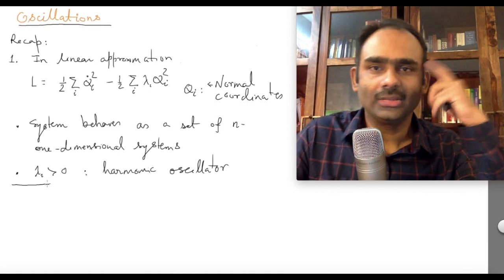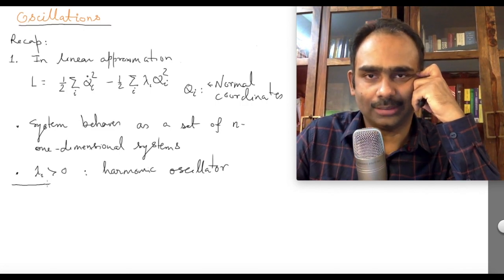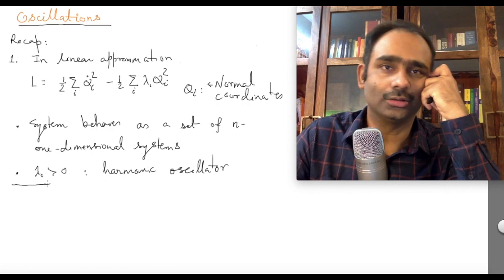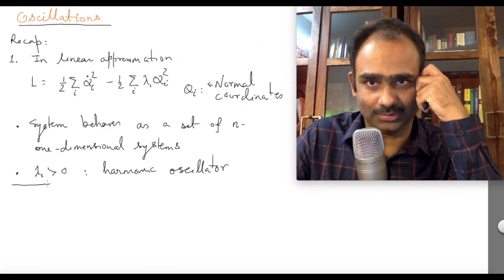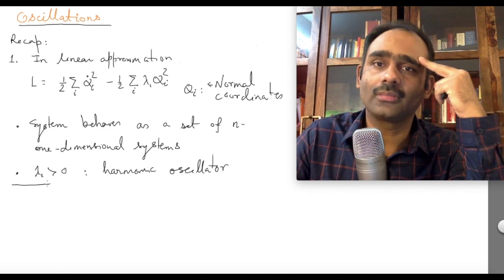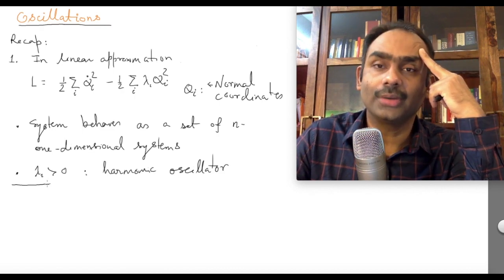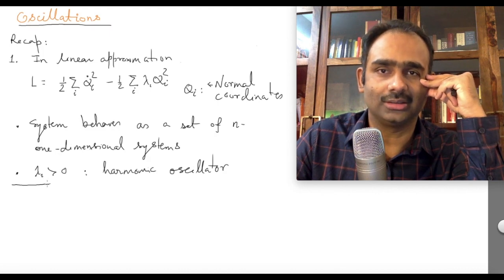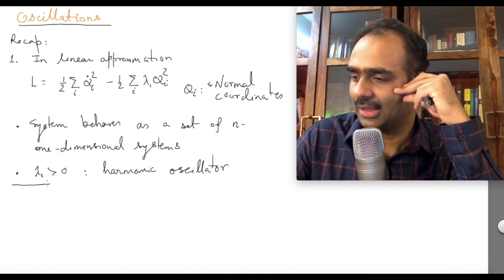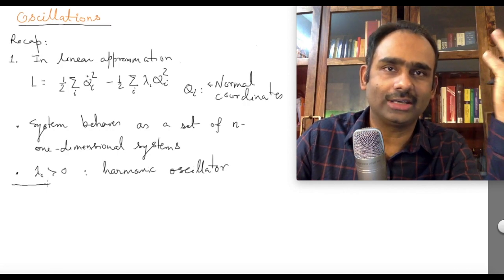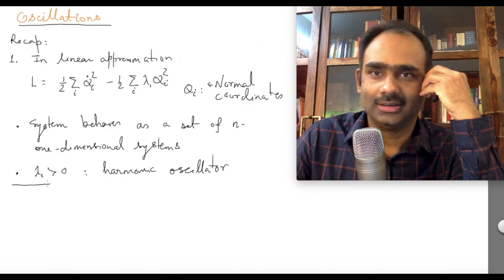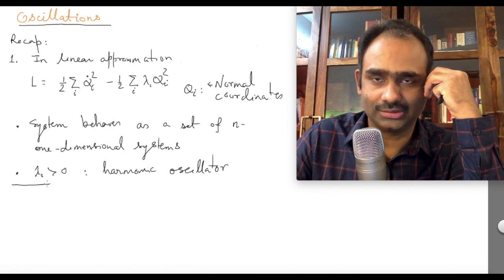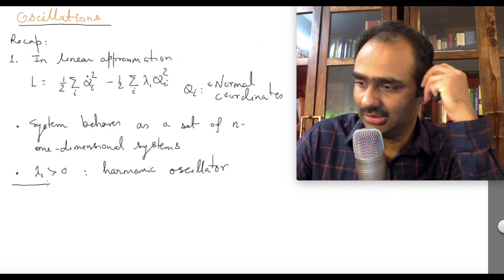If our lambda_i are greater than 0, look at a particular generalized coordinate q_i — if for that particular coordinate lambda is greater than 0, then the contribution to the Lagrangian from that generalized coordinate is that of a harmonic oscillator. There are several things that can happen to lambdas: they could be positive, they could be negative, or they could vanish. Because these correspond to real symmetric matrices, these lambda_i eigenvalues will be real — they cannot be complex.